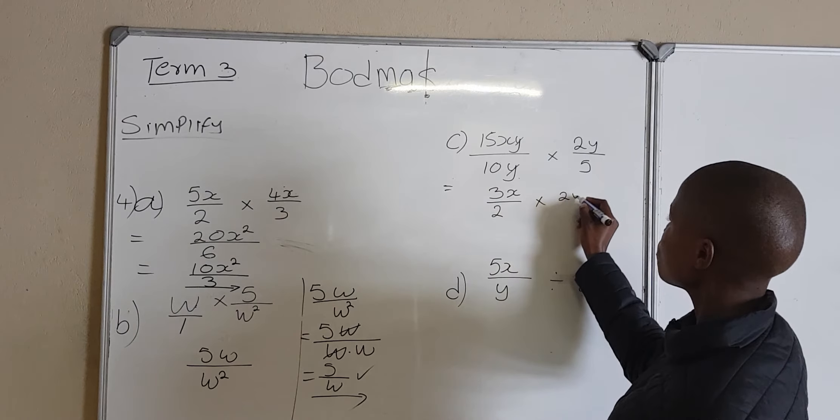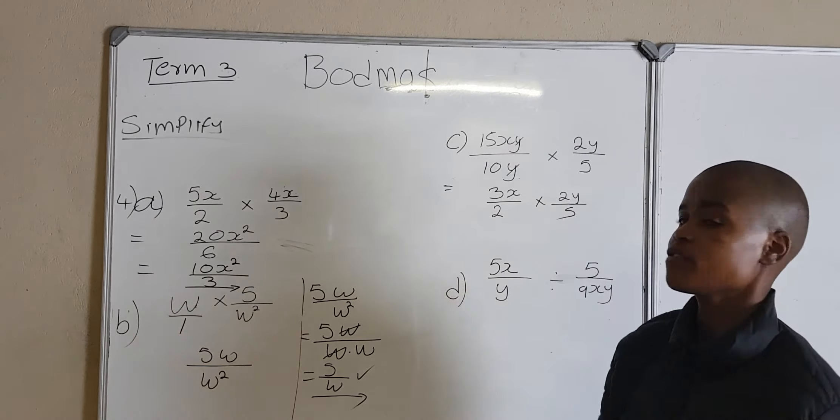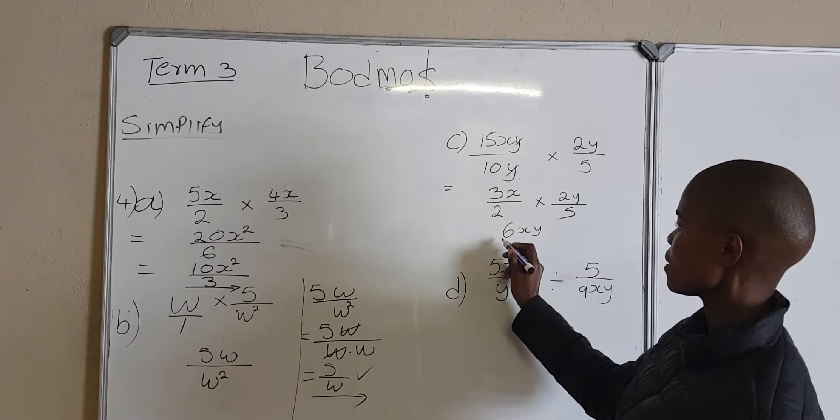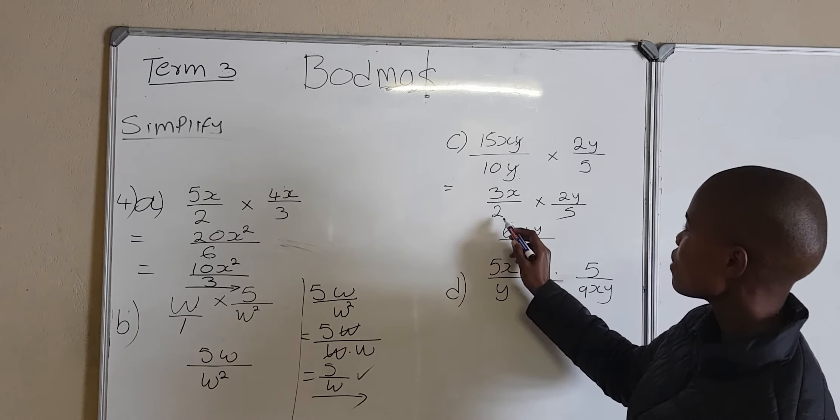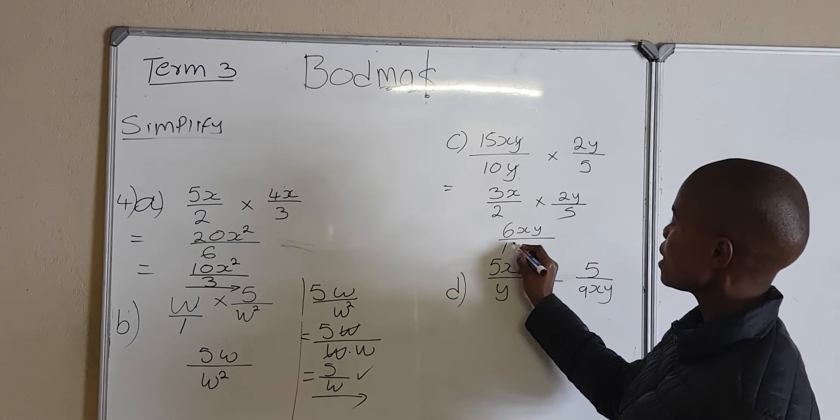Multiply by 2y, divide by 5. Now I'm going to do my multiplication — numerator by numerator, denominator by denominator. So I'm going to say 3 times 2 is going to be 6xy, because there's an x there and a y there. And then 2 multiplied by 5 will give me 10.